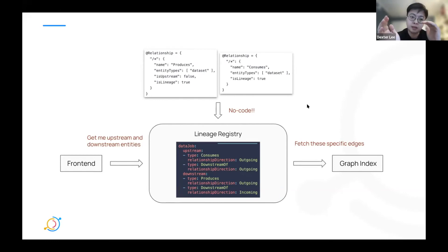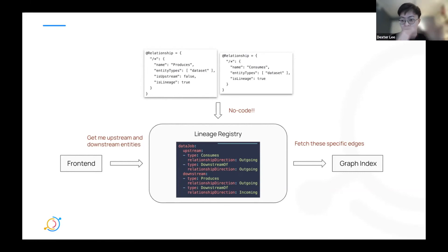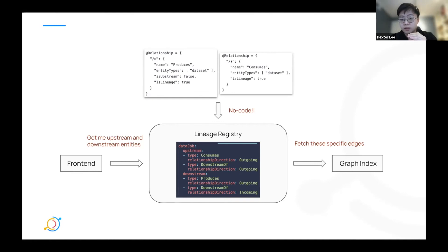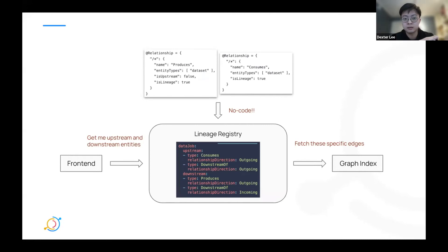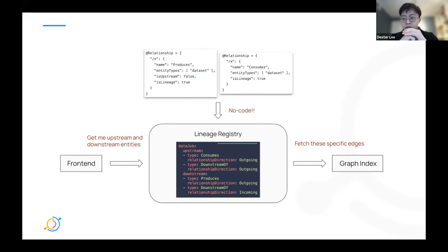The contract between the front end and back end is now much simpler. The front end says: give me all the upstream and downstream lineages — without knowing anything about edge types. The lineage registry in the back end decides which edges to fetch on the graph index and fetches those specific edges. As a side effect, our lineage graph has also improved, since all entities and edges that show up in the lineage graph are now defined on the back end through these relationship annotations.